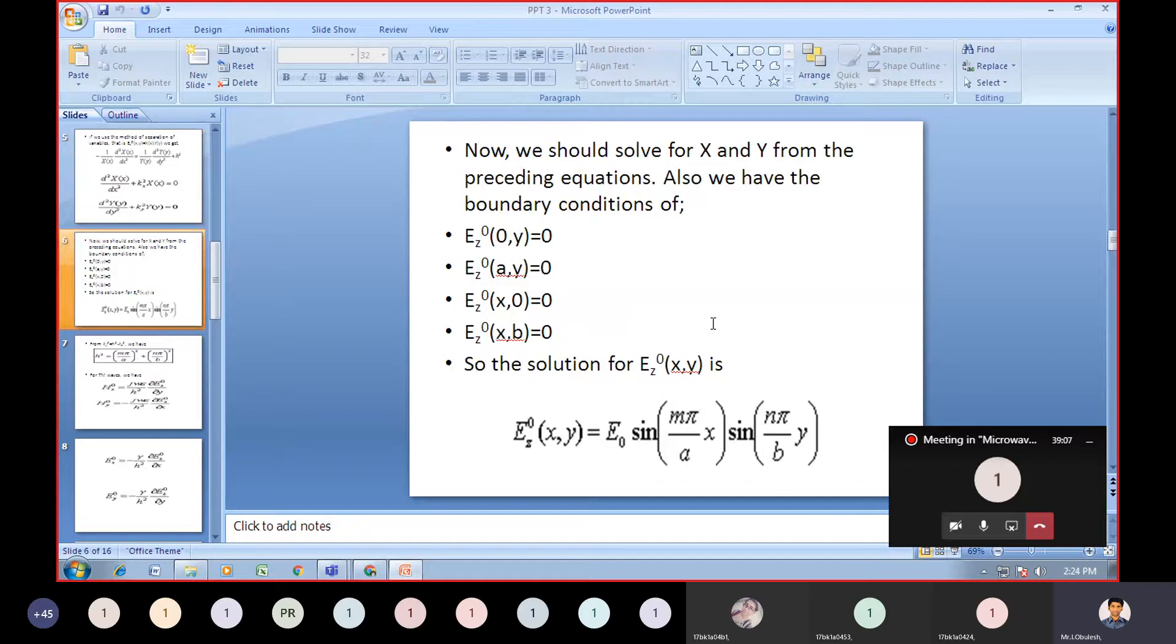Now we should solve for X and Y from the preceding equations with the boundary conditions. The boundary conditions are: at x equals zero, E_y equals zero; at x equals a, E_y equals zero; at y equals zero, E_x equals zero; and at y equals b, E_x equals zero. You need to assume these boundary conditions.